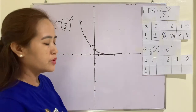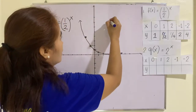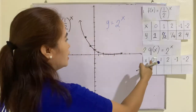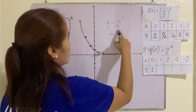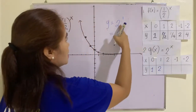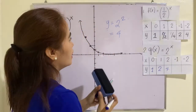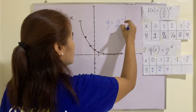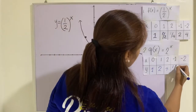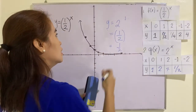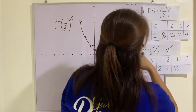Let's go to number 2. Here, the base is 2 and the exponent is still x, so that will be y equals 2 raised to x. Replacing x by 0 gives 1. Replacing x by 1 gives 2. Replacing x by 2 gives 4. For x equal to negative 1, you get the reciprocal of 2, which is 1/2, and make it positive — so that is 1/2. For negative 2, the reciprocal of 2 is 1/2, make it positive, so that will be 1/4.